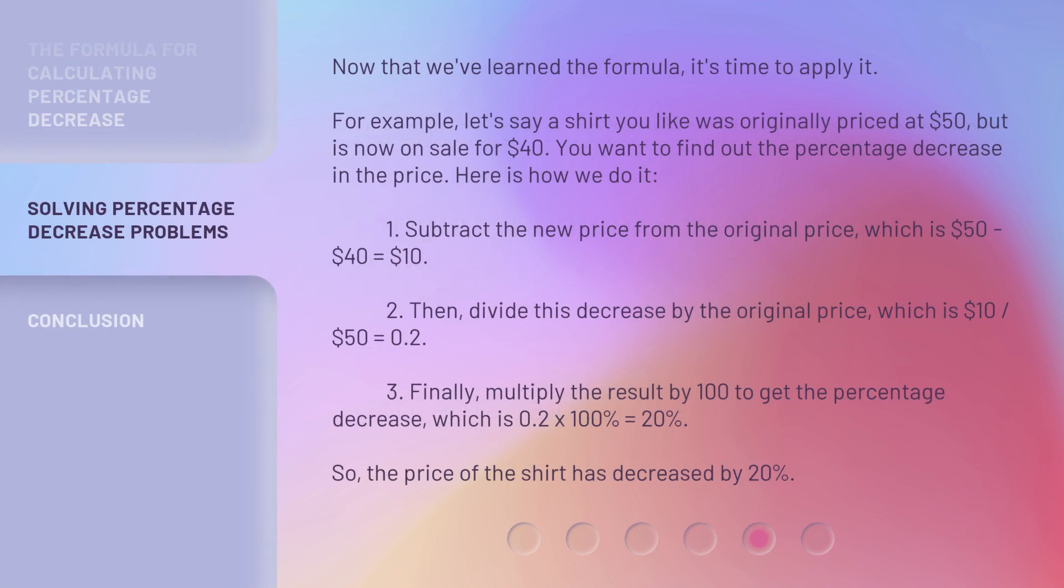Now that we've learned the formula, it's time to apply it. For example, let's say a shirt you like was originally priced at $50, but is now on sale for $40. You want to find out the percentage decrease in the price. Here is how we do it.